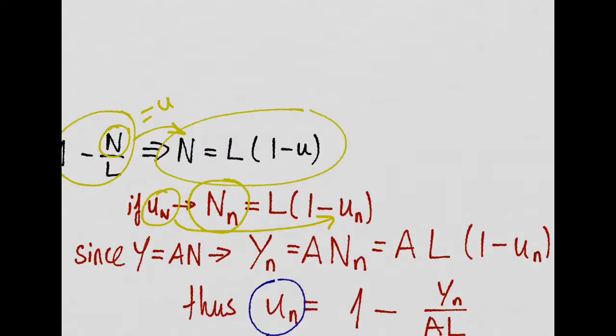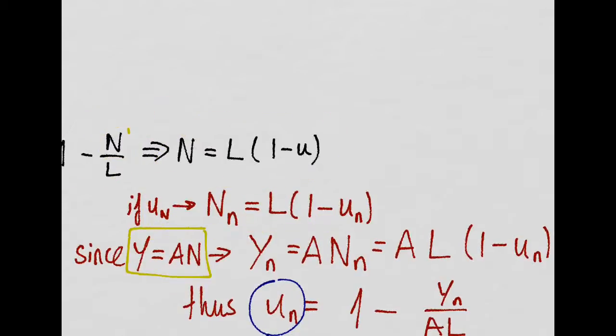And since this is our production function, when we plug in this natural level of employment here, we get the natural level of output in the economy. So, if we know the natural unemployment rate, we will just have to plug in this expression right here and we will get the expression for the natural level of output.